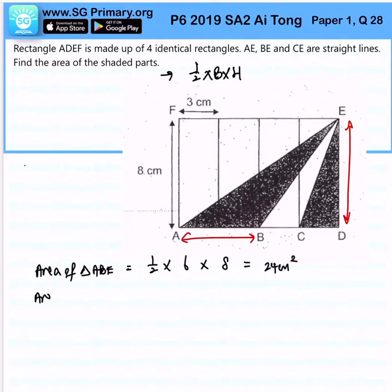Now, next, area of triangle CDE, that will be half times 3 times 8, which is 12 cm².